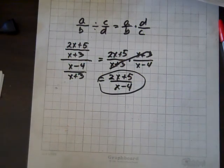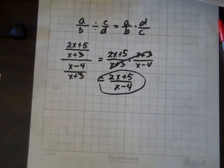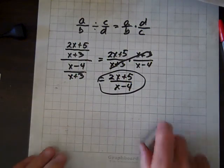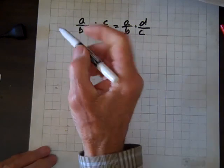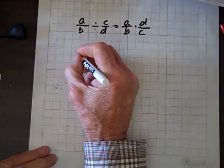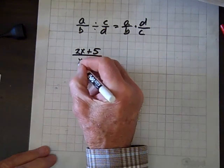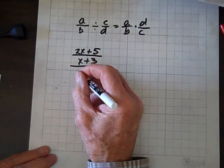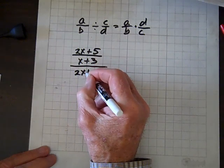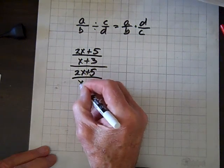Now, let's do one more of these. We've got (2x+5)/(x+3) divided by (2x+5)/(x-4).